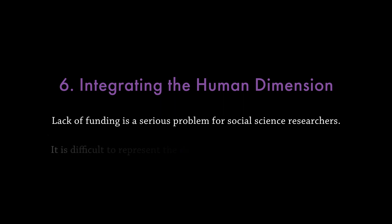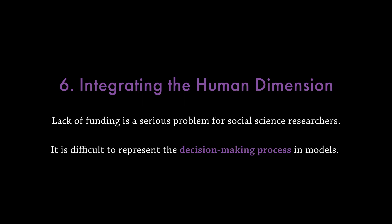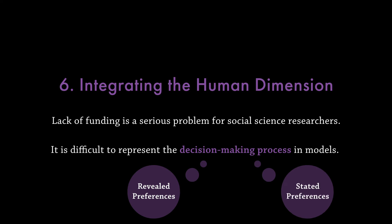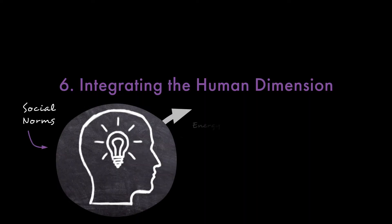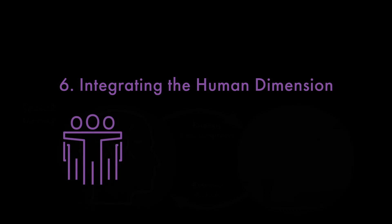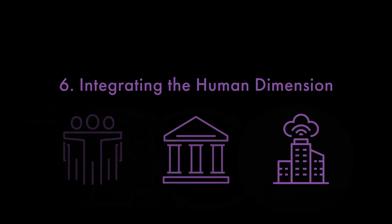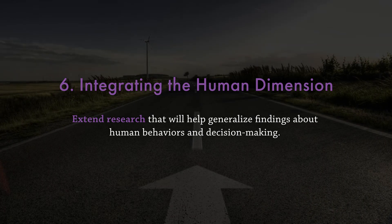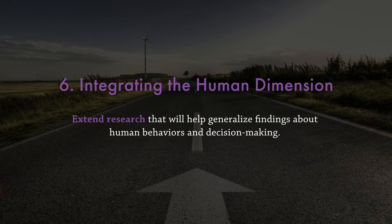Another part of this challenge is that it is difficult to represent the actual decision-making process in models. SAS modelers often access the outcomes of decision-making, such as revealed preferences or indirect representations such as stated preferences, but not the actual decision-making process itself. There are several ways to move forward. First, we must move beyond the use of stylized theories to model individual human behavior and instead actually represent the entities that have disproportionate impacts on SAS dynamics — for example, organizations, governmental entities, and businesses. Second, there is an urgent need to extend research that will help us generalize findings about human behavior and decision-making — that is, to converge on generic modules to represent decisions in SAS models.